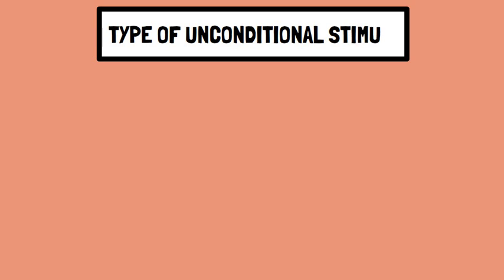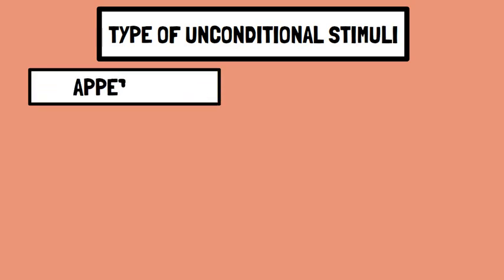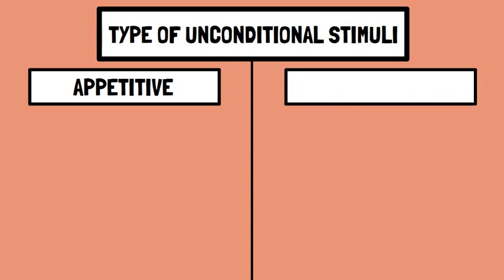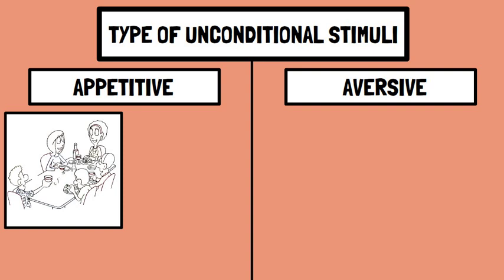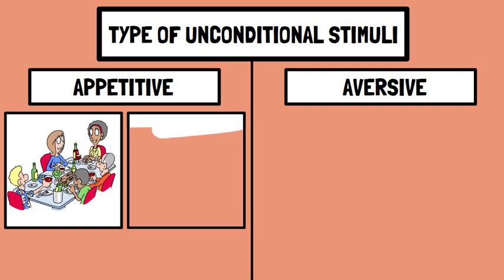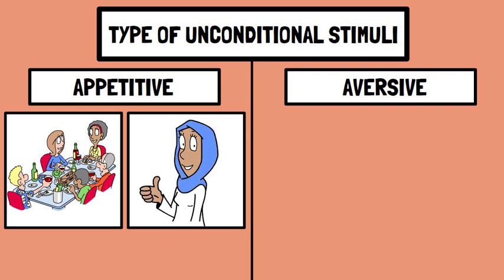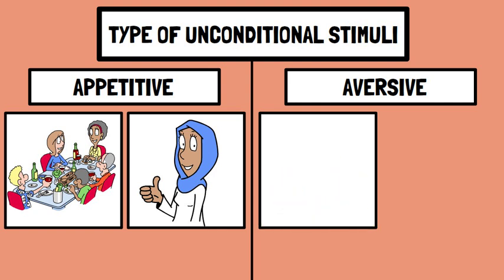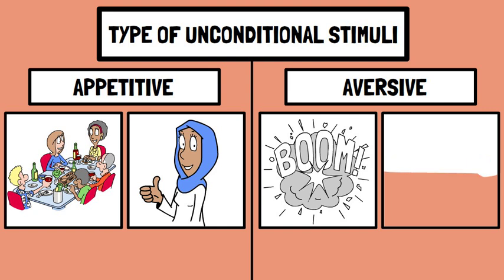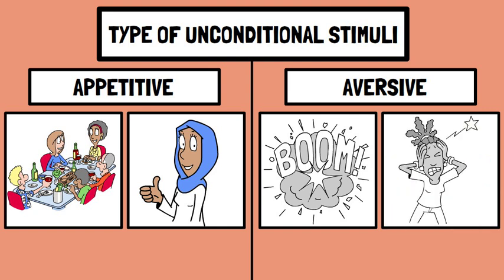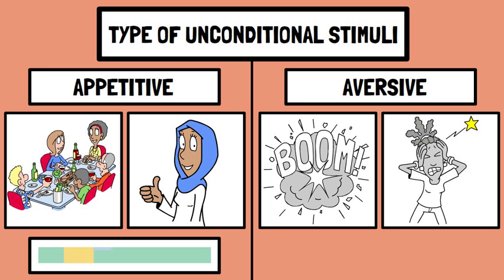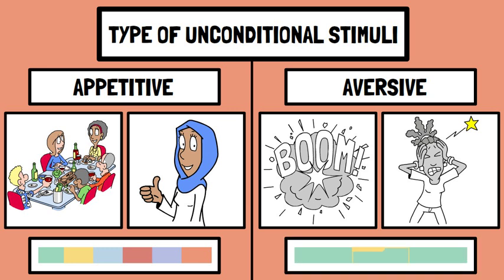Number two: Type of unconditioned stimuli. The unconditioned stimuli used in classical conditioning are basically of two types — appetitive and aversive. Appetitive unconditioned stimuli automatically elicit approach responses such as eating, drinking, or caressing, giving satisfaction and pleasure. Aversive unconditioned stimuli such as noise, bitter taste, electric shock, or painful injections are painful and harmful, eliciting avoidance and escape responses. Appetitive classical conditioning is slower and requires more acquisition trials, but aversive classical conditioning can be established in one, two, or three trials depending on the intensity of the aversive stimulus.